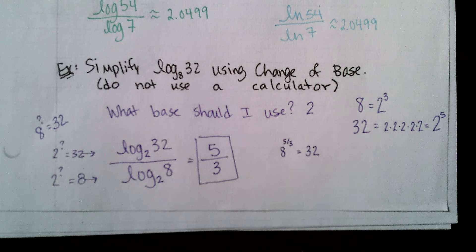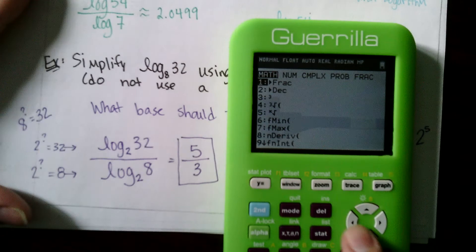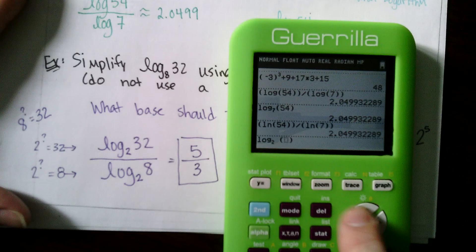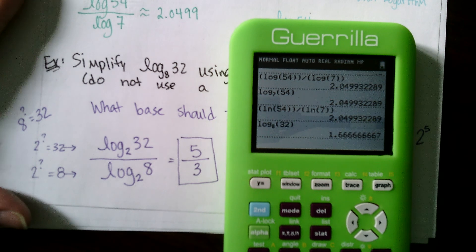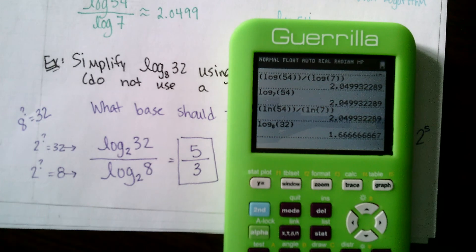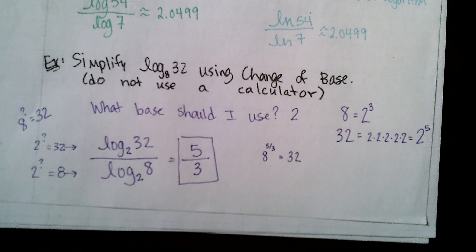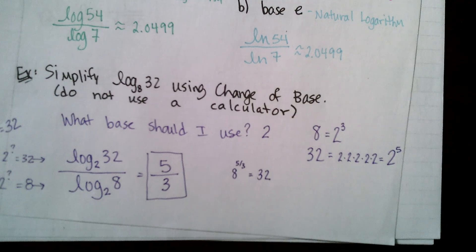You can verify on your calculator: log base 8 of 32 gives 1.6 repeating, which is one and two-thirds, or 5/3. However, you should practice using the change of base formula so you're familiar with it in case you need to apply it on a quiz or test.